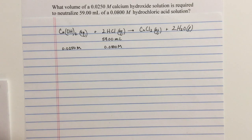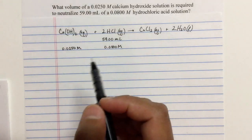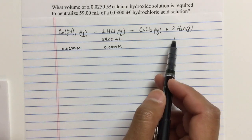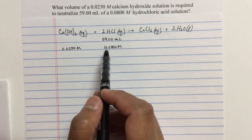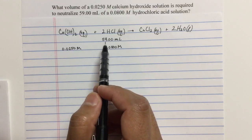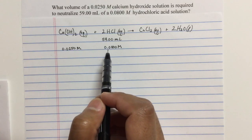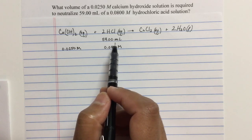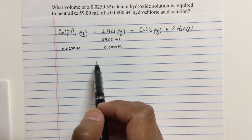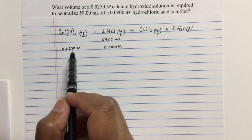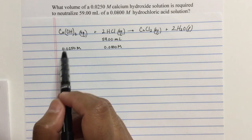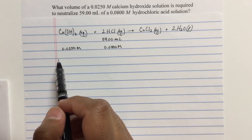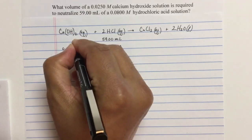There's a lot going on there, so I wrote some data down for us. Here's the balanced equation, and we know that the hydrochloric acid is 0.0800 molar, and I've got 59.00 milliliters of it. We're going to take a known concentration of calcium hydroxide, and we're going to add some volume to it until this reaches its endpoint.